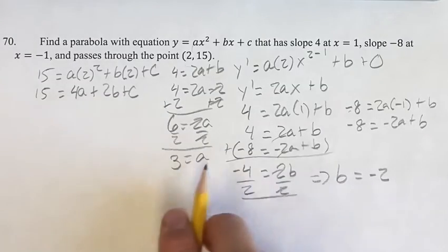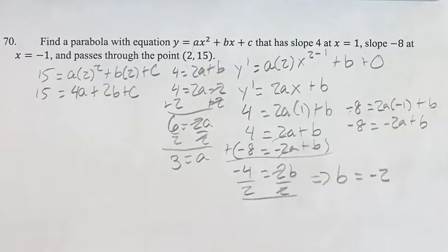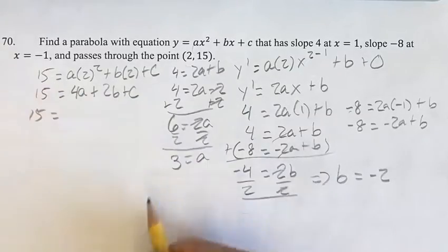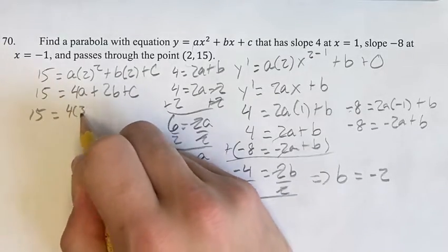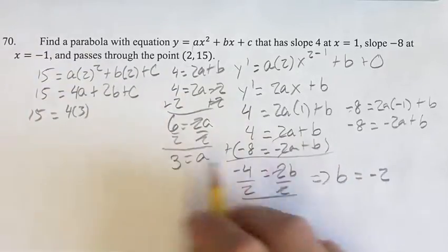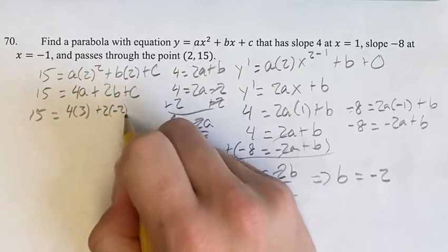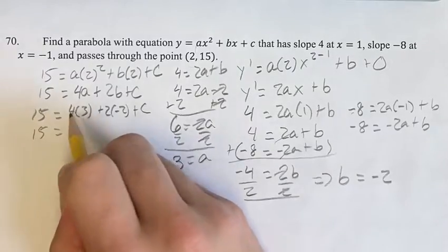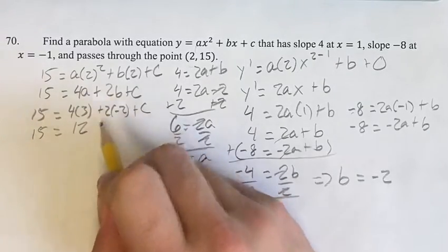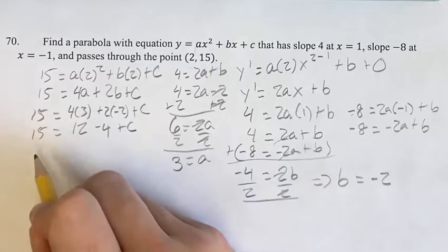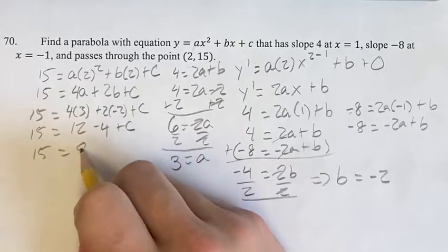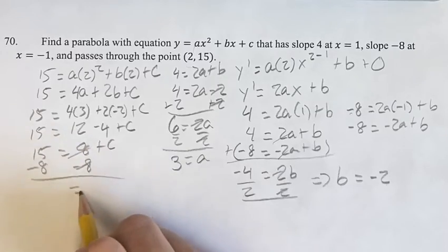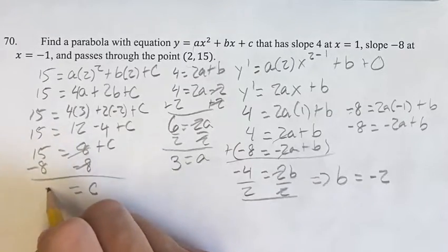Now we plug our values of a and b into the first equation to find c. So 15 equals 4 times 3 plus 2 times negative 2 plus c. That gives 15 equals 12 minus 4 plus c, which is 15 equals 8 plus c. Subtracting 8 from both sides, we get c equals 7.